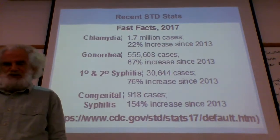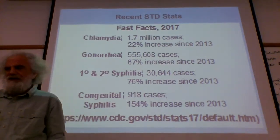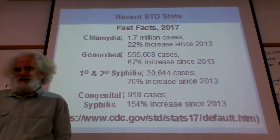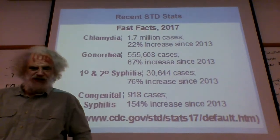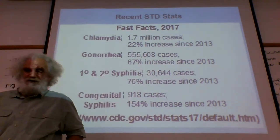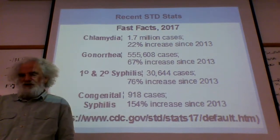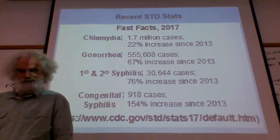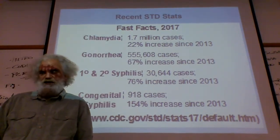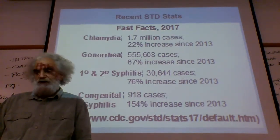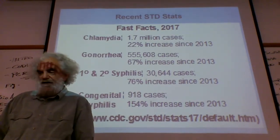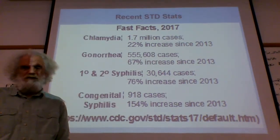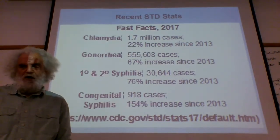Some recent statistics — three years old but still relevant: chlamydia had a 22% increase, gonorrhea a 67% increase. Syphilis — we'll get into the primary and secondary conditions — not very many cases but a significant increase. Congenital syphilis, that's untreated long-term, not very many cases but a pretty high increase in amounts. So chlamydia is pretty common, gonorrhea less so, and syphilis blessedly is not all that common.